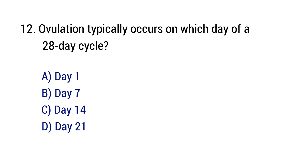Question number 12. Ovulation typically occurs on which day of a 28-day cycle? The right answer is option C: Day 14.